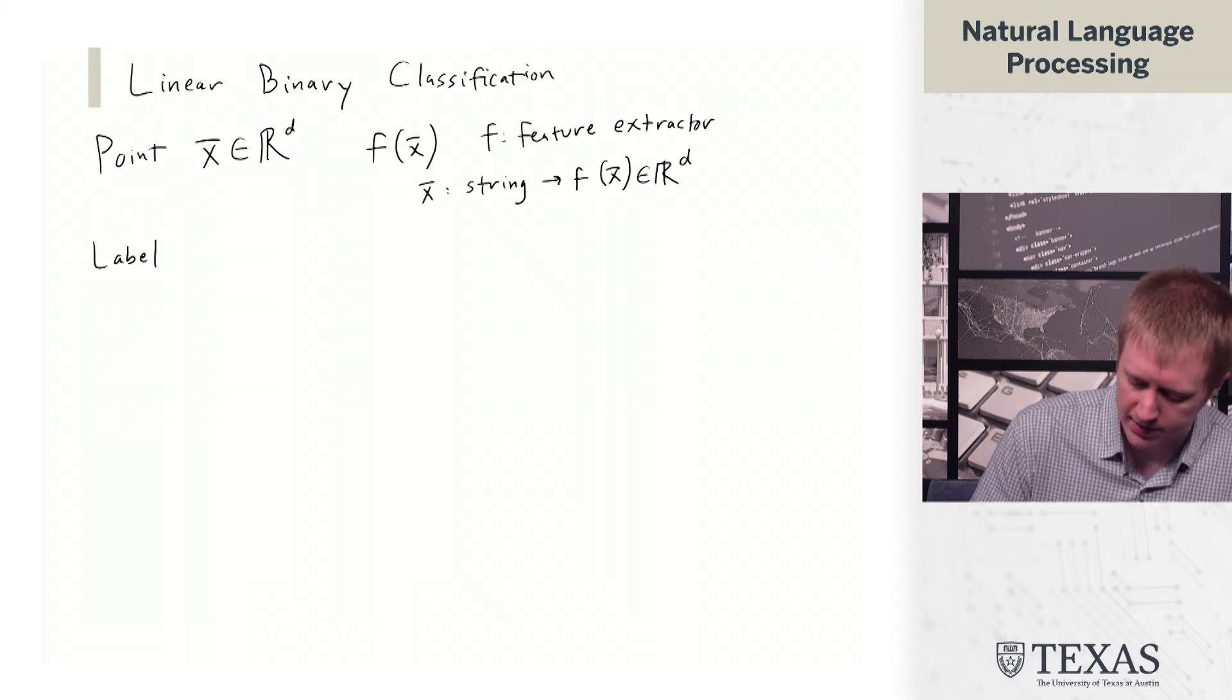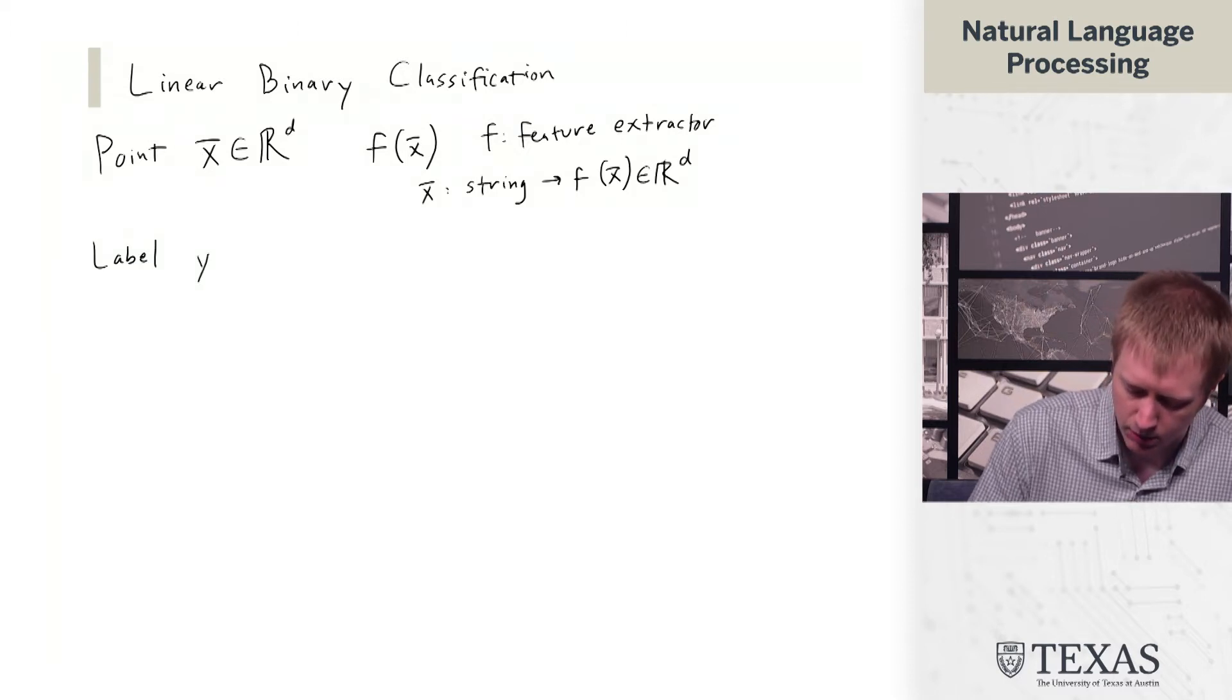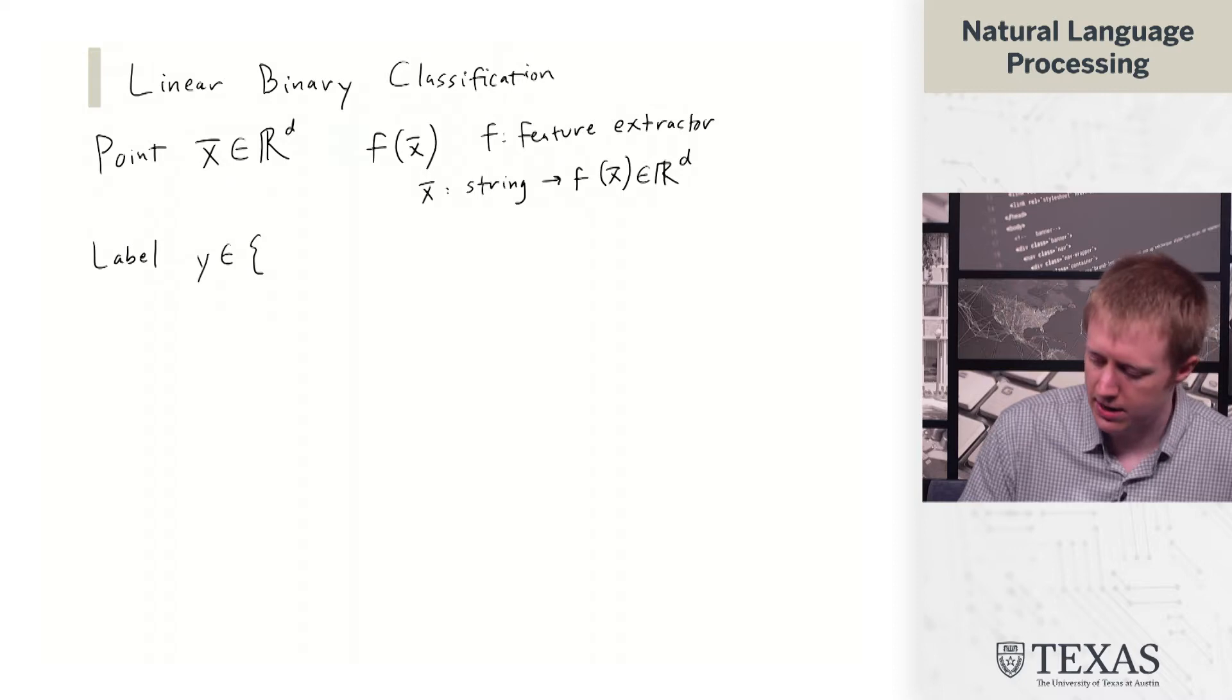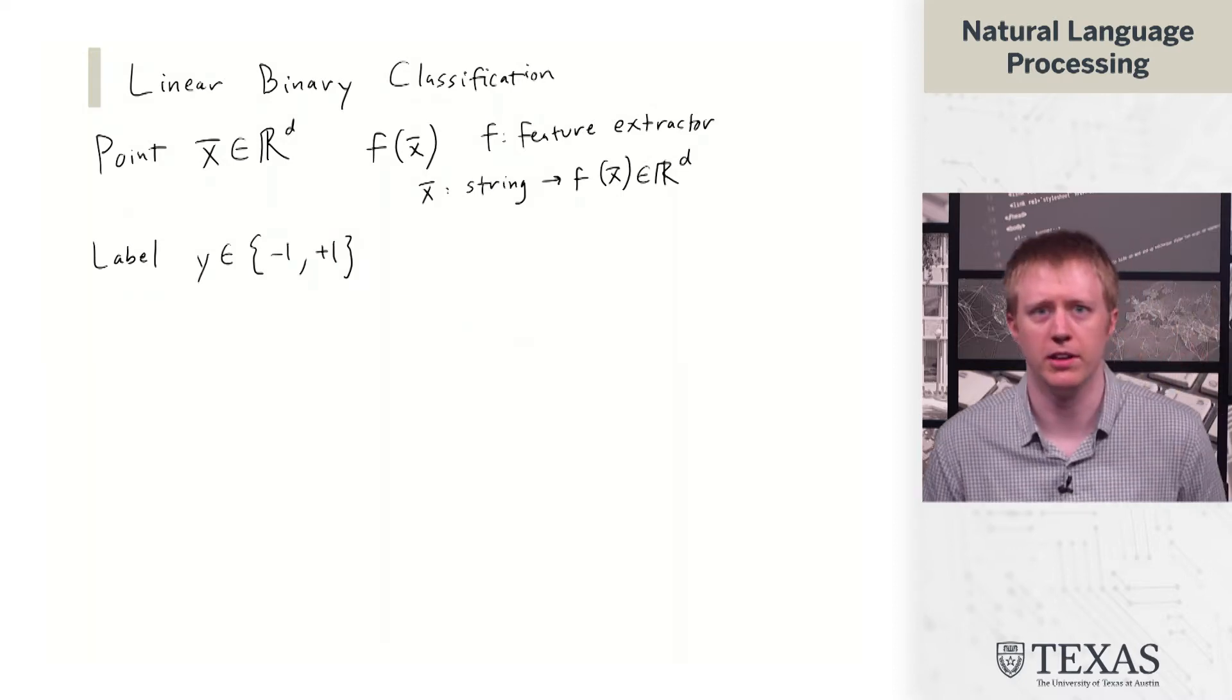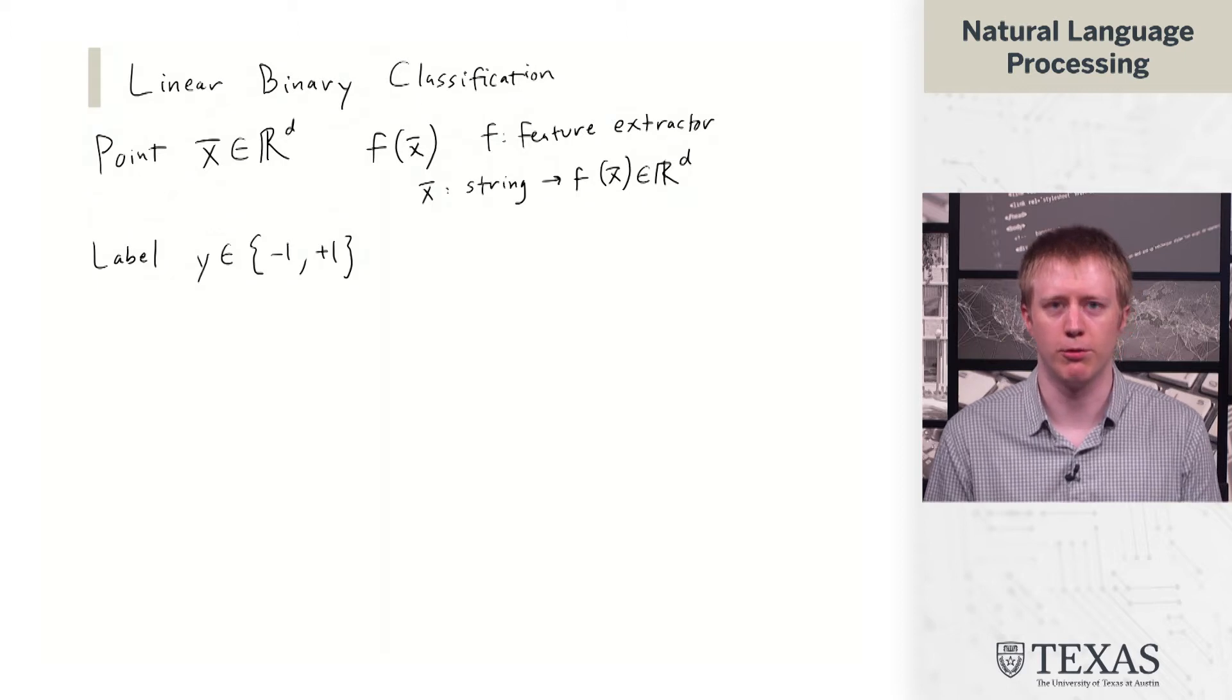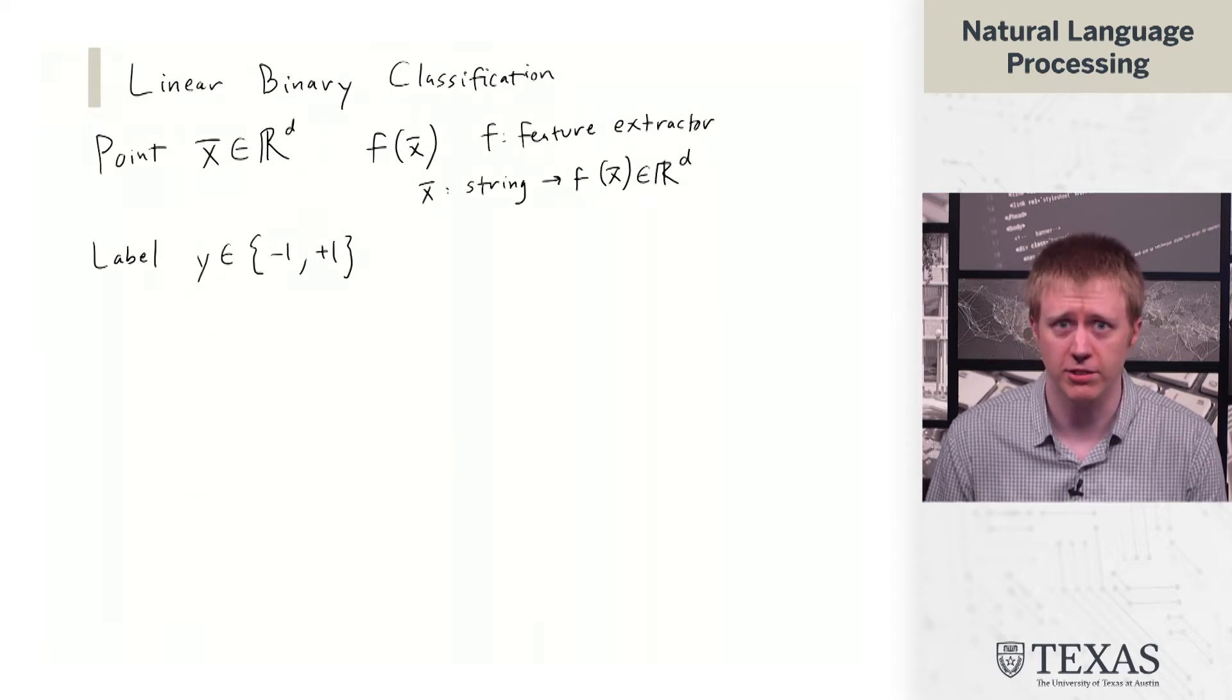Each point has a label, y. And in binary classification, there's only going to be two possibilities. We are going to refer to these as minus 1 and plus 1 or negative and positive class.